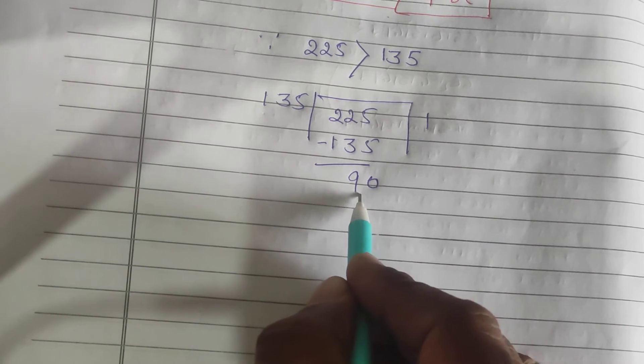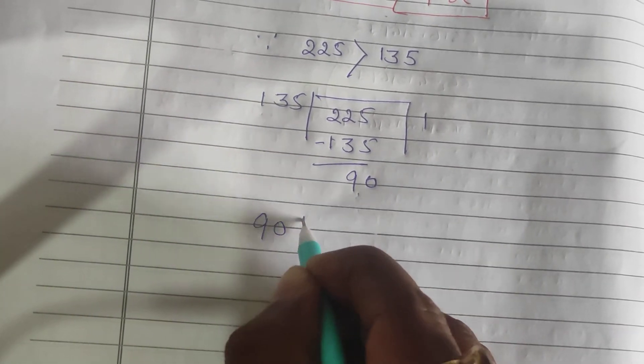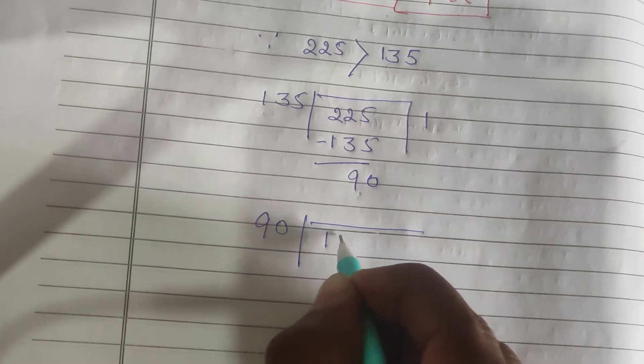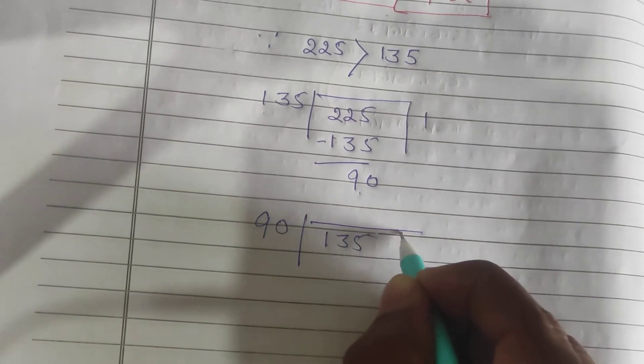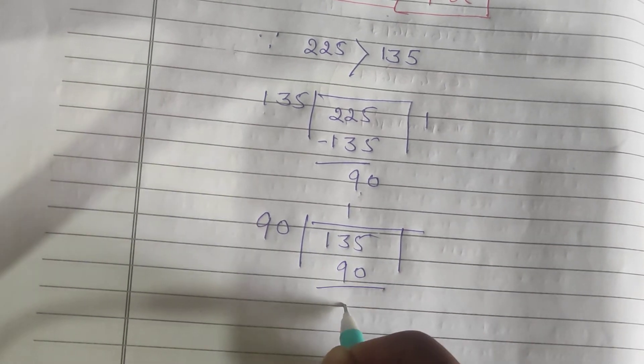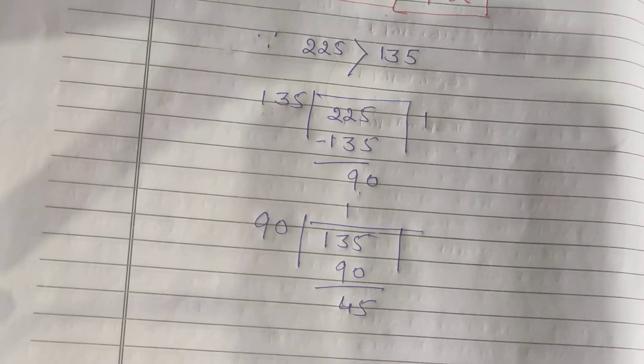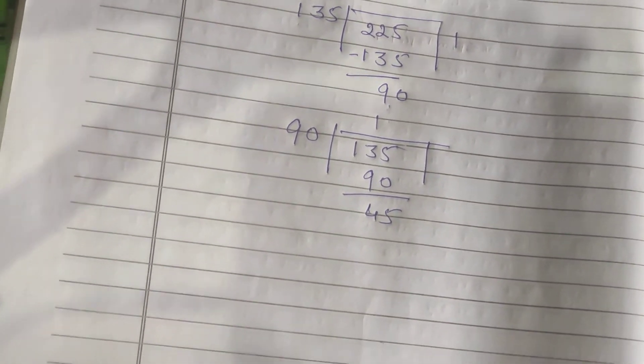Let's divide 135 by 90. If we divide 135 by 90, it will go one time: 90. This time 45 is the remainder. We have to continue this process.